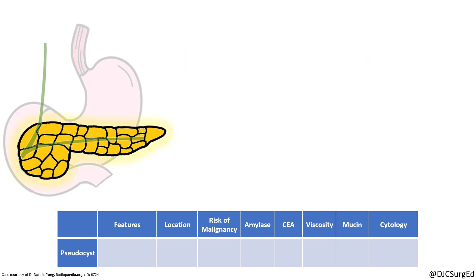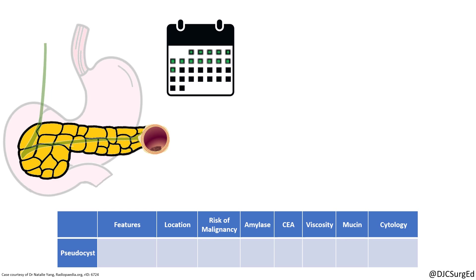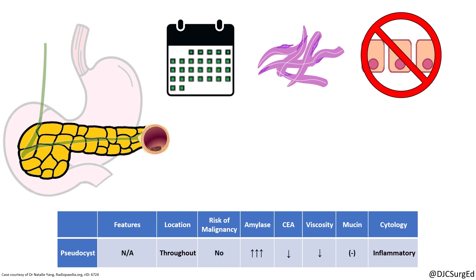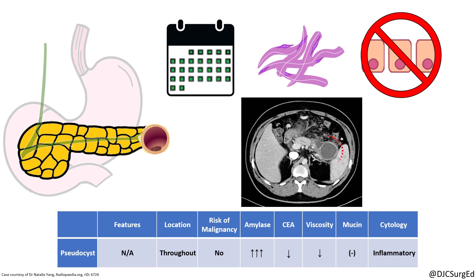Pancreatic pseudocysts are a local complication of acute interstitial edematous pancreatitis and are characterized as a fluid collection persisting beyond 4 weeks. This is a non-neoplastic inflammatory process as the wall of pseudocysts contains collagen and granulation tissue and is not a true epithelium. Pseudocysts communicate with the pancreatic duct, can be located throughout the pancreas, and have elevated amylase on fluid analysis with no mucin or elevated tumor markers. On imaging, they are well-circumscribed, homogenous, low-attenuating fluid collections.